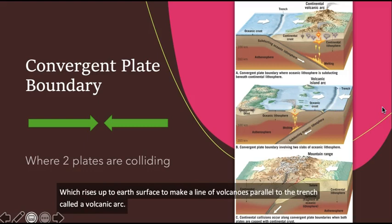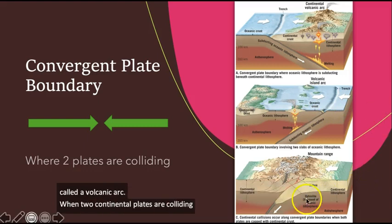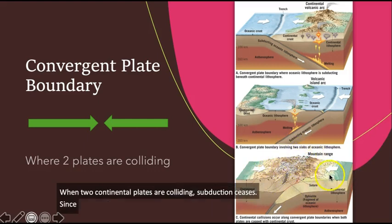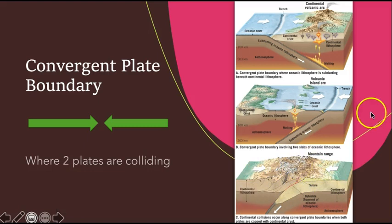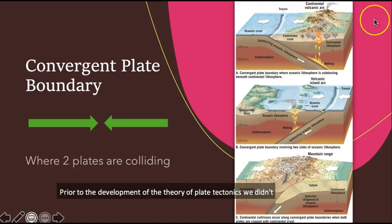When two continental plates are colliding, subduction ceases, since the crust on both plates is too buoyant to subduct. Prior to the development of the theory of plate tectonics, we didn't have a complete understanding as to why volcanoes occur where they do.